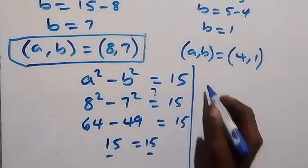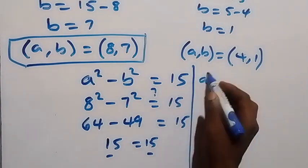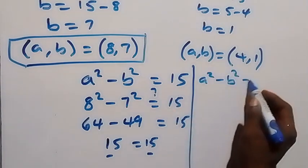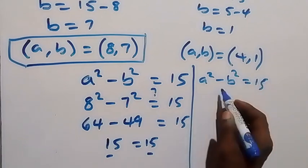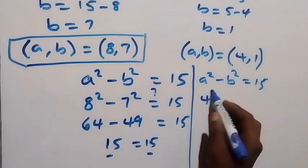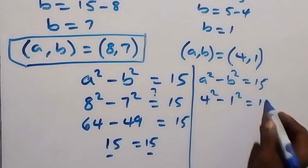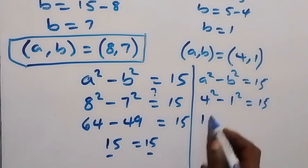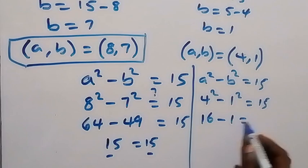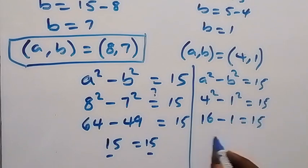We have a²-b² = 15. For a = 4 and b = 1, we have 4²-1² = 15. This gives us 16-1 = 15.